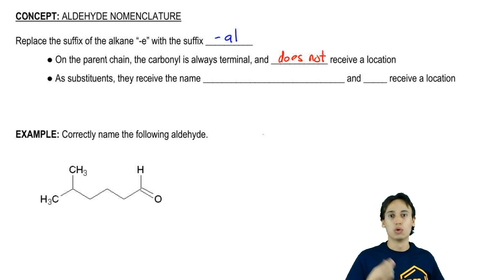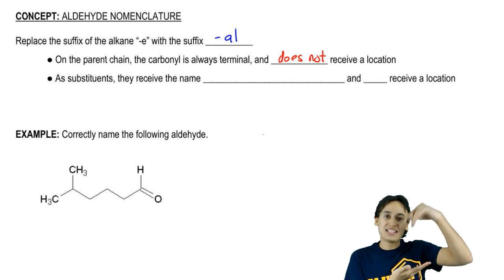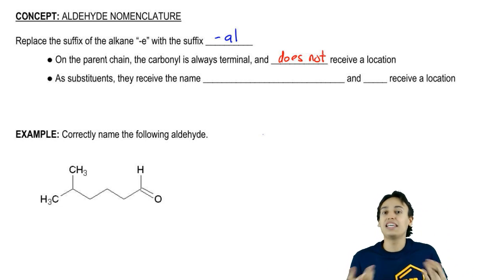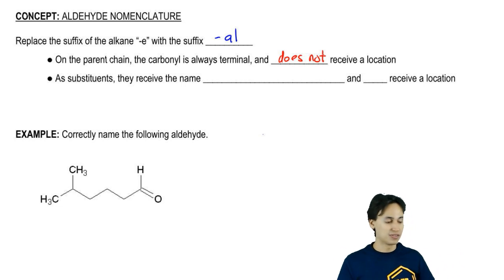So instead of saying one-hexanal, you would just say hexanal because there's no possibility of having two or three hexanal. If it was a two or three, now it would be inside of the chain and that's called a ketone. But if it's terminal, then it's an aldehyde and we don't need to name the location.